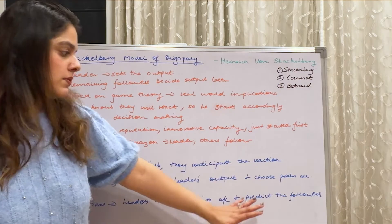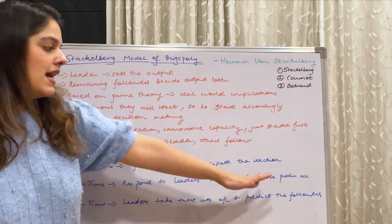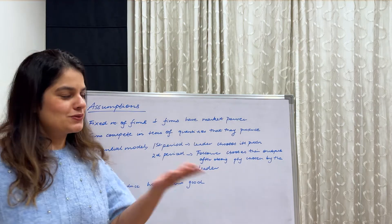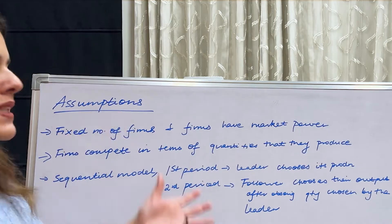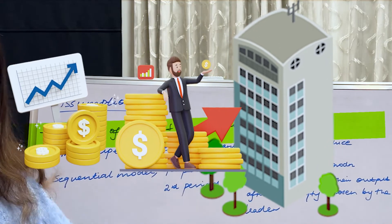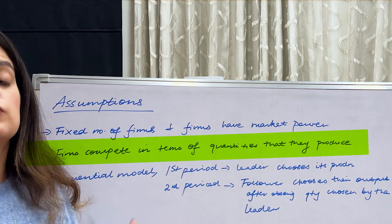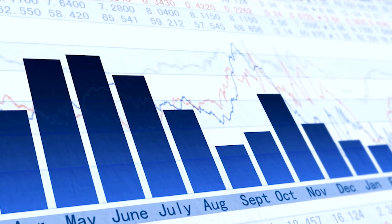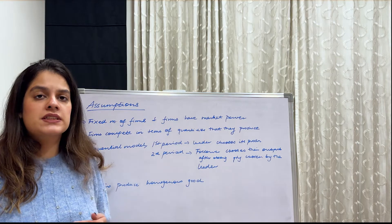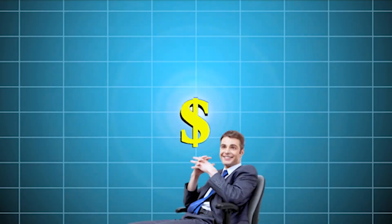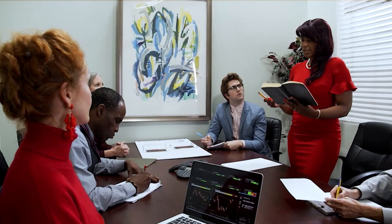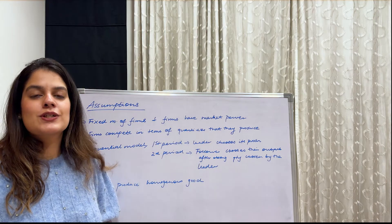Now let me quickly run through the assumptions of the model. First, there is a fixed number of firms and firms have market power. Second, firms are competing in terms of quantity — quantity is the key, and they are competing for market share. Third, it is a sequential model with two periods: the first period is when the leader comes out and chooses production, and the second period is when followers decide their output according to the leader's output. Lastly, all firms are producing homogeneous goods.